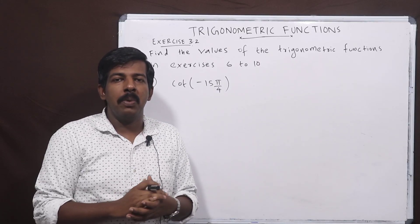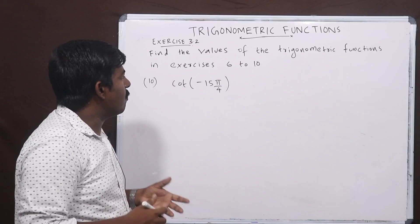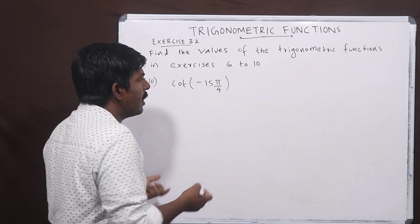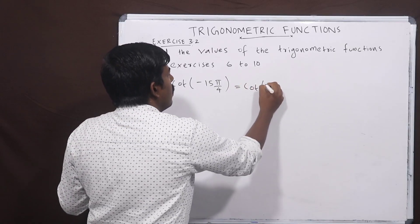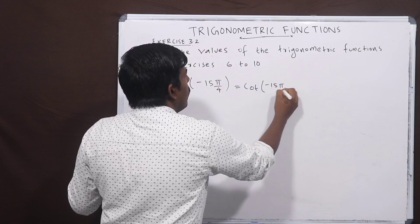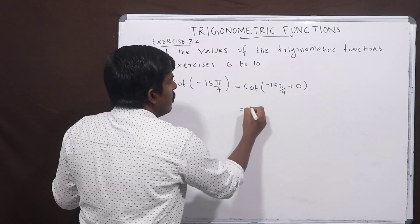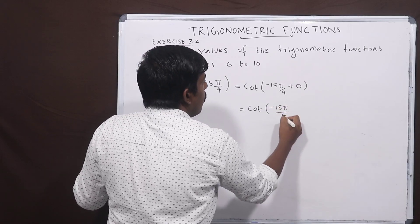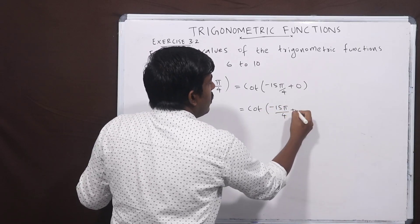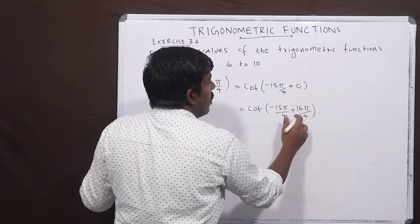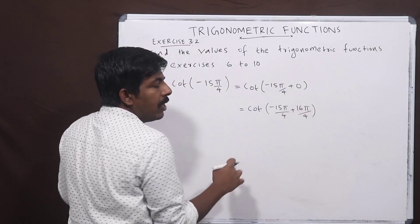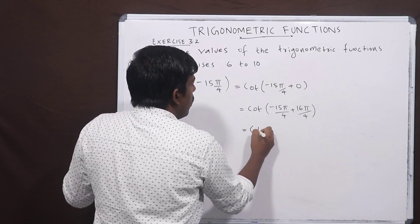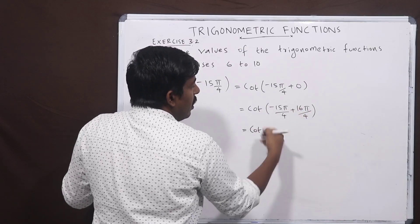The last question involves 15π by 4. We find an equivalent angle by subtracting multiples of 2π. 16π by 4 equals 4π, which is two full revolutions, so 15π by 4 is equivalent to 15π by 4 minus 16π by 4, giving minus π by 4. We then find the trigonometric value at that reduced angle.